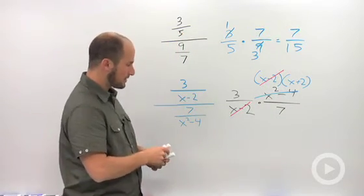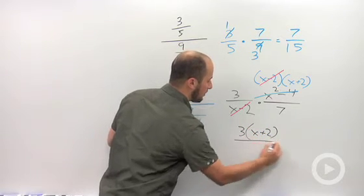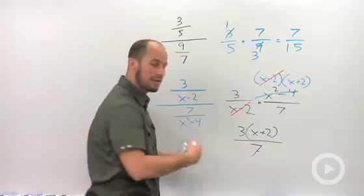Multiplying across, we then end up with 3 times (x plus 2) all over 7.